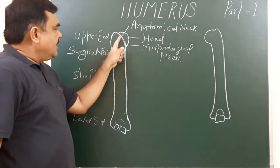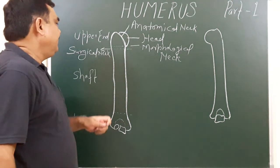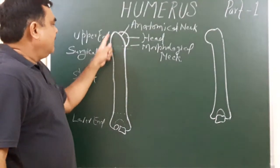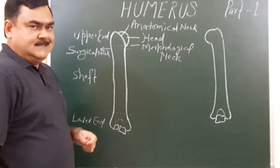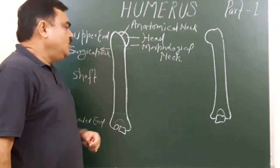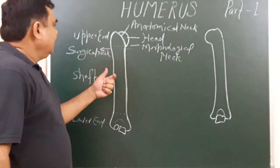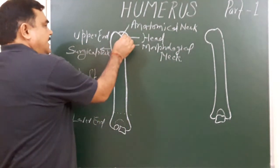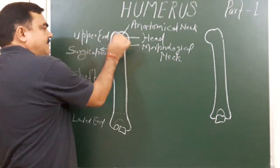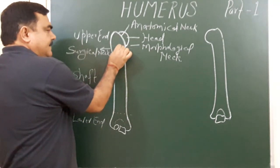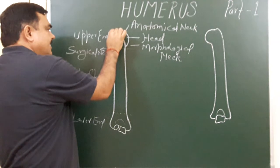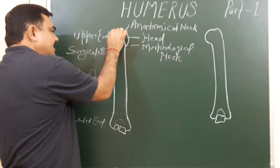So these are the three necks present in the upper part of the humerus. Here is the head, the anatomical neck, the morphological neck, and the surgical neck.